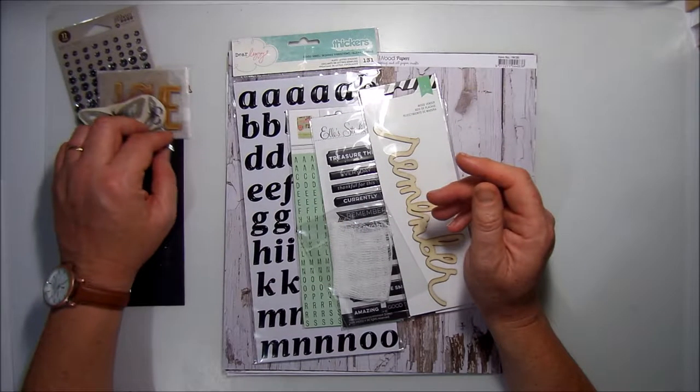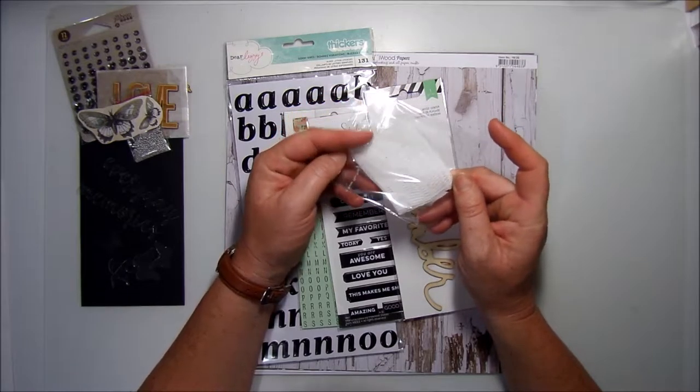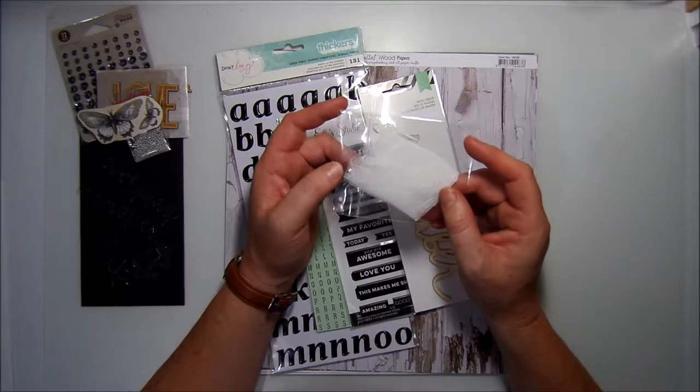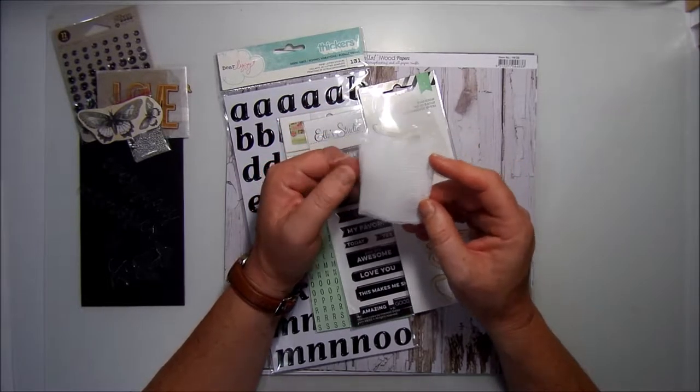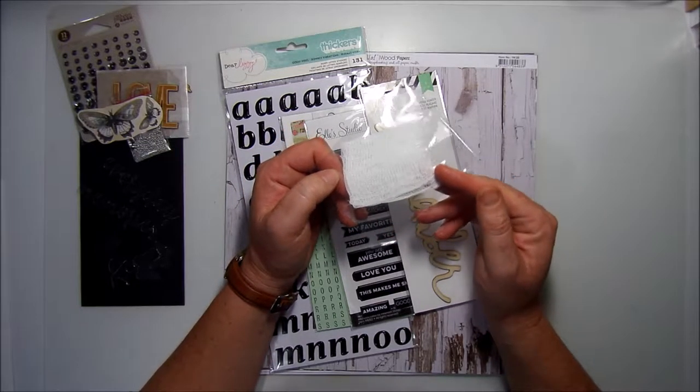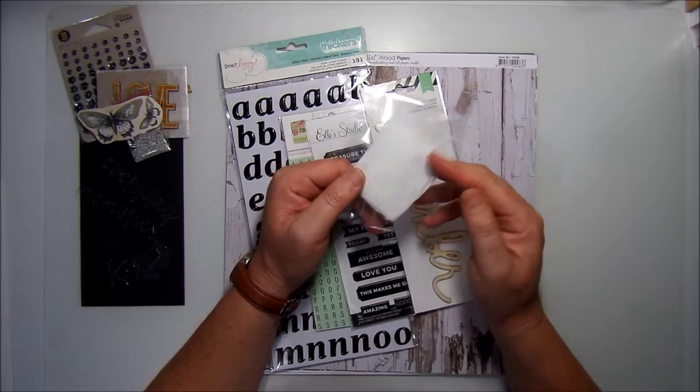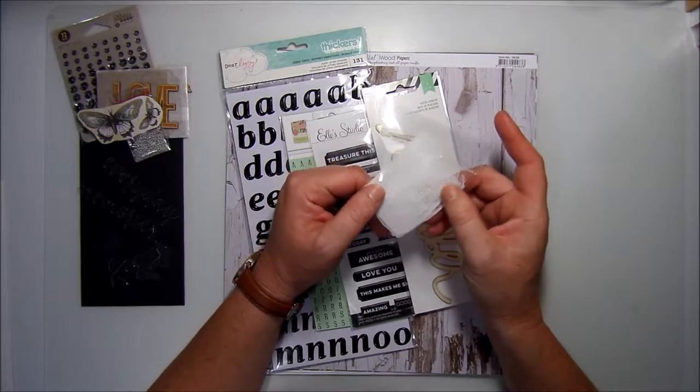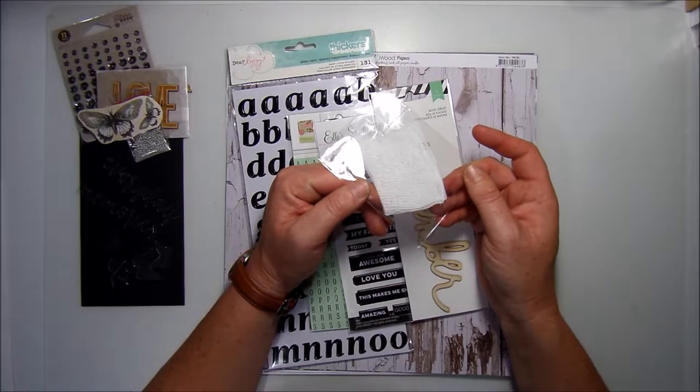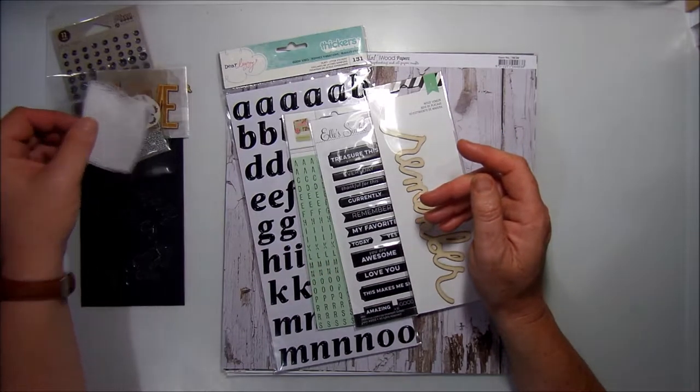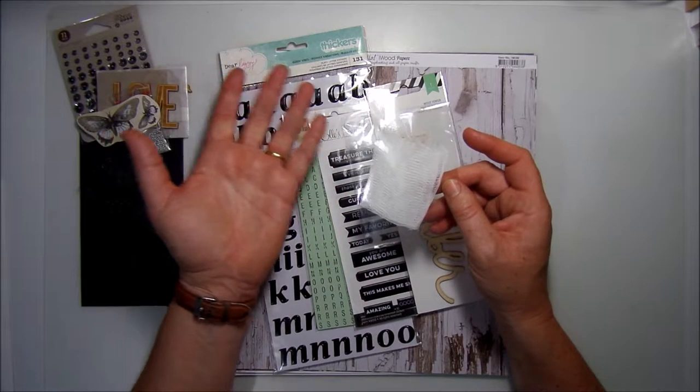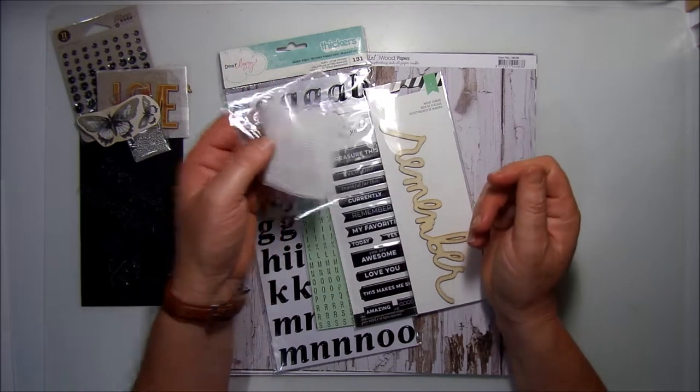We also have some cheesecloth. I really like altering my cheesecloth. I'm pretty sure in my last video I did for Anna's, one of my kaiser craft cupboard layouts, I altered this by changing the color. I just normally use mists. I love that added texture it sort of gives your layout.